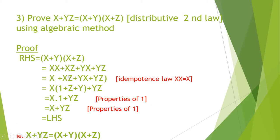Third question: prove x plus yz is equal to x plus y into x plus z. This is the distributive second law. This theorem has already been proved by truth table and proof by perfect induction. Now we are proving it using the algebraic method. Here, we first consider the RHS and work towards the LHS. So RHS equals x plus y into x plus z.